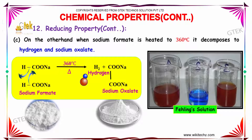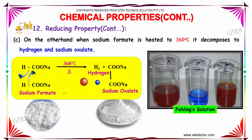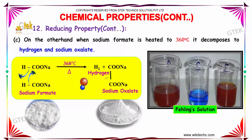On the other hand, when sodium formate is heated to 360 degrees Celsius, it decomposes to hydrogen and sodium oxalate. Sodium formate on heating at a temperature of 360 degrees Celsius produces hydrogen and sodium oxalate.